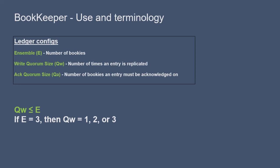The minimum write quorum size is of course one, and the maximum is equal to the ensemble size. The ack quorum size is equal to or less than the write quorum size. If qa is equal to qw, that means we need acknowledgement from all of the bookies that the message is being written to before the system can move on.